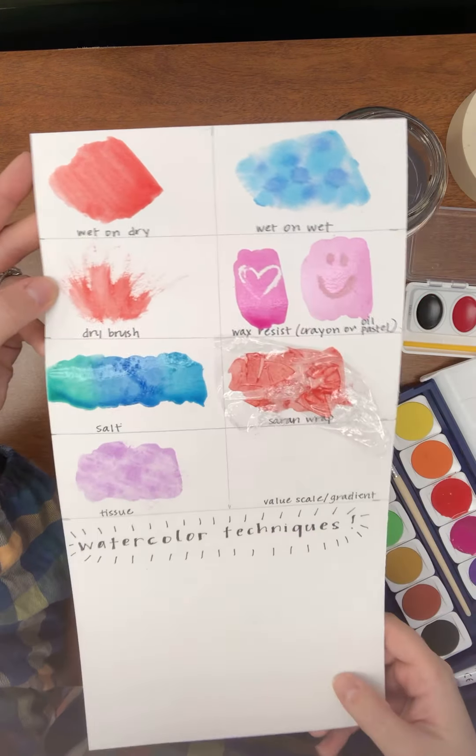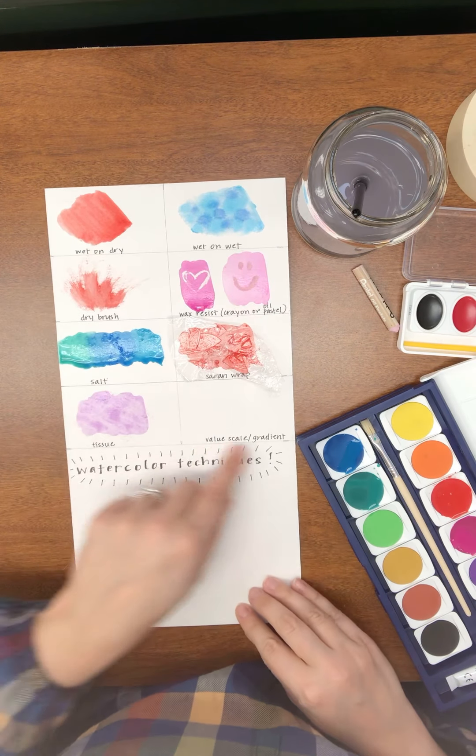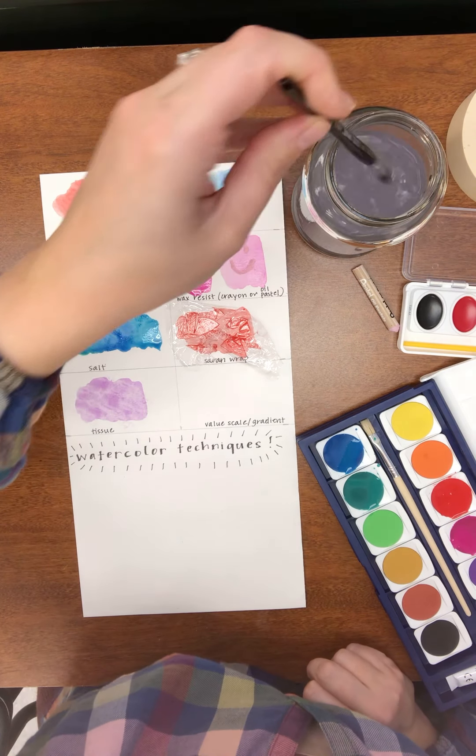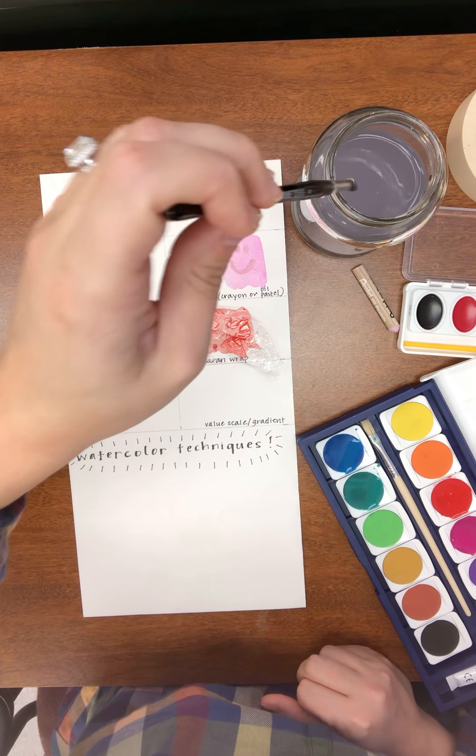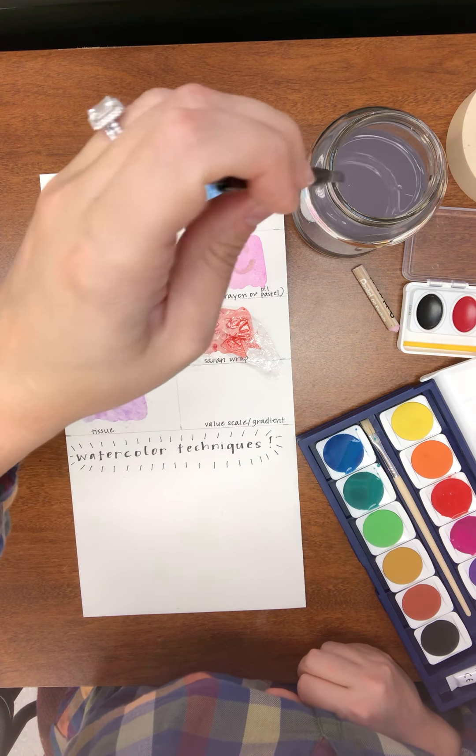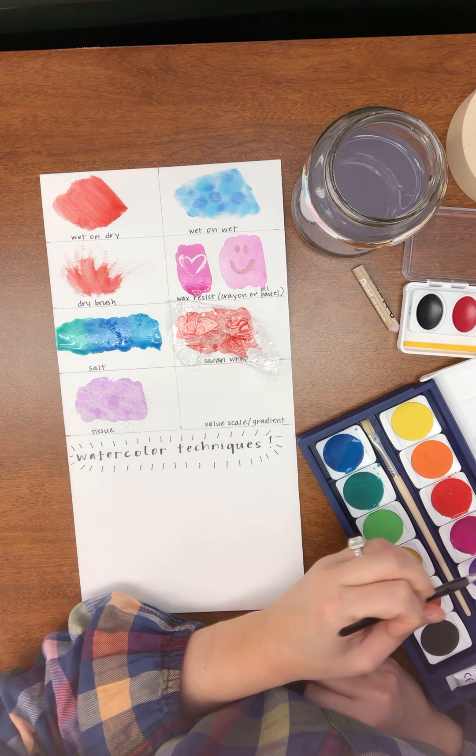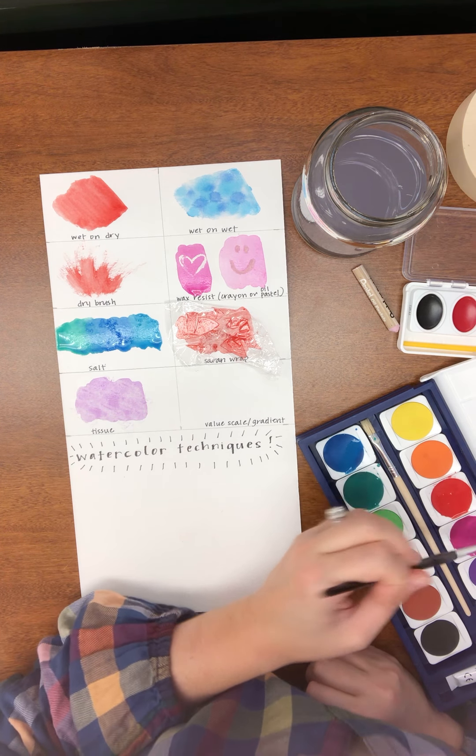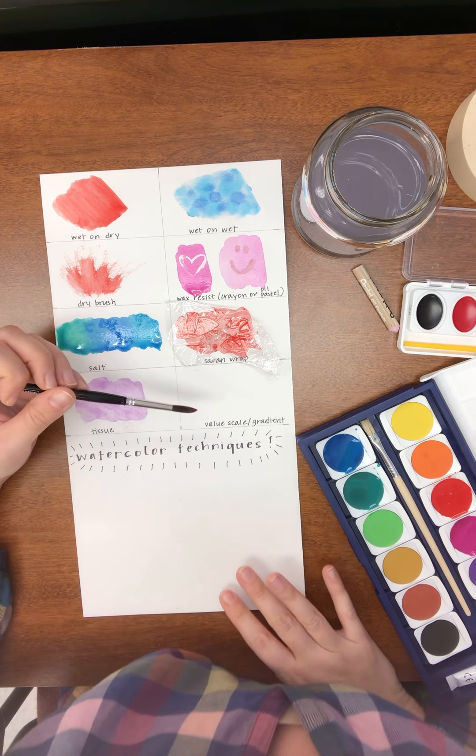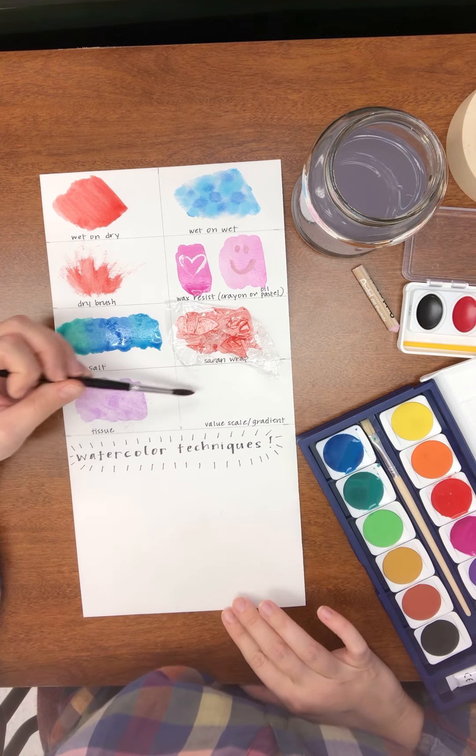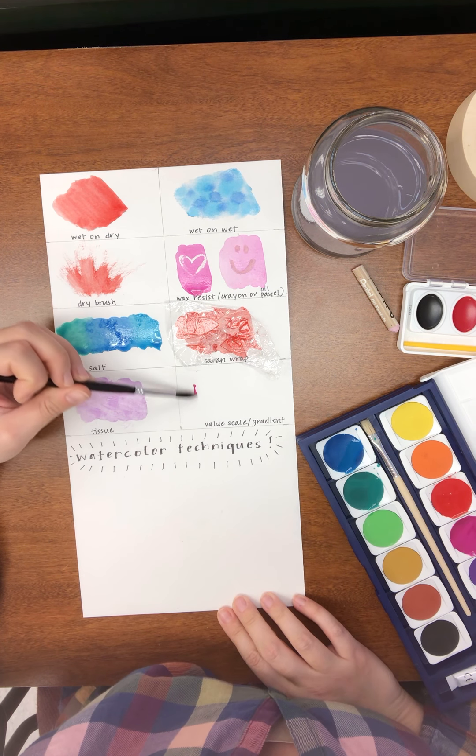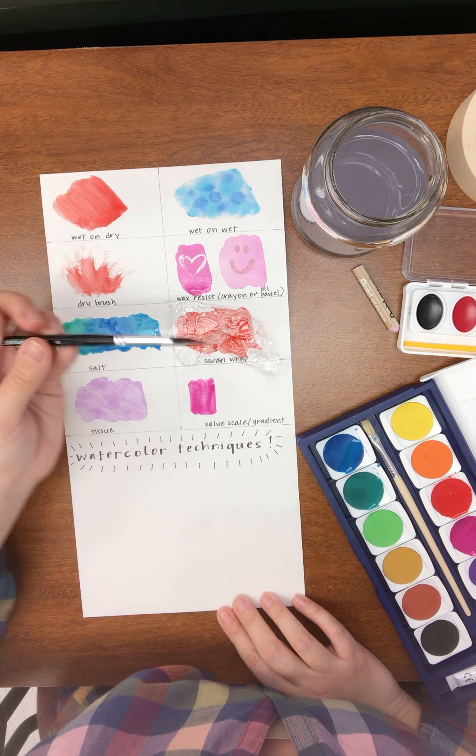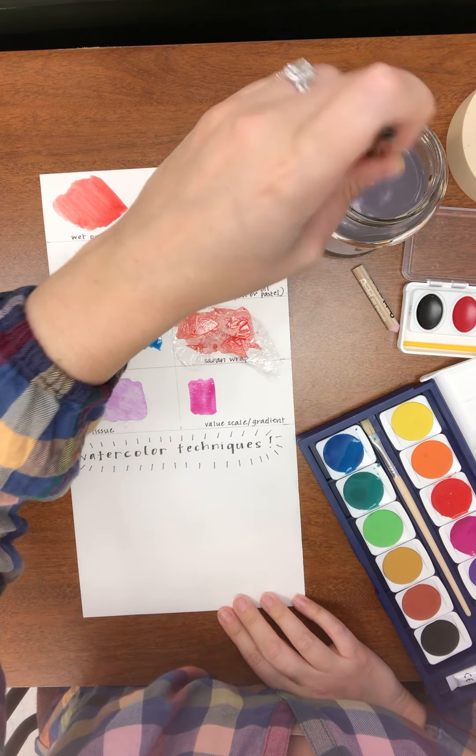We're going to move on to the last one, which is a value scale or gradient. They both mean the same thing. Remember value means shading. So we're really going to be shading with the watercolors. Now, usually when we shade with like a colored pencil, an oil pastel, a regular pencil, we're adding more and more pigment to our paper, right? We're adding more and more pencil to make it darker, more colored pencil to make it darker, more vibrant. With watercolor, you're going to start with a lot of pigment on your brush. I'm using pink. But to lighten it, you're going to start actually mixing more and more water into your paper.